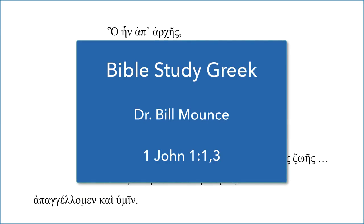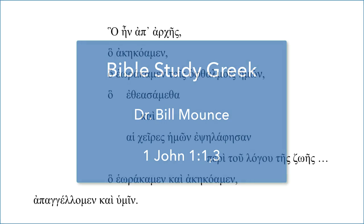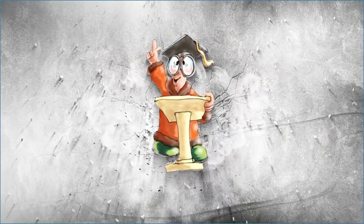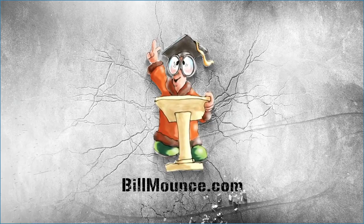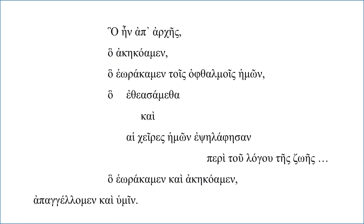Today's episode of Bible Study Greek discusses 1 John 1 verses 1 and 3 and addresses the problem of what happens when you get a very complicated Greek sentence and how do you even get started. There are two things that make this verse — a verse and a half, I should say — complicated. One is that you start with a series of relative pronouns, the second is you don't get to the verb until verse 3, and a third issue is there's no expressed subject, so you have to get it out of the verb.